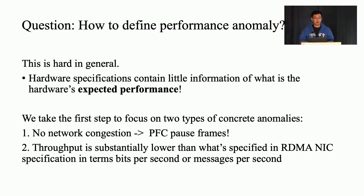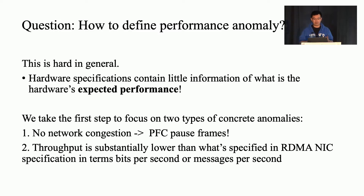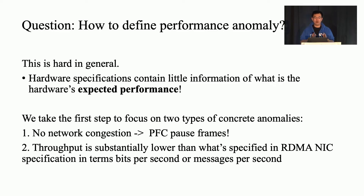To build such a tool, we first need to answer how to define a performance anomaly. This is hard because hardware specifications contain little information about what expected performance should be, especially given the variety of application workloads. Therefore, we take the first step to focus on two types of concrete anomalies that can be precisely defined and are of great importance in production environments. The first is that there should be no PFC pause frames when the network is not congested — for example, no slow receiver. The second is that throughput should not be much lower than the NIC specification, for example not more than 20% lower in terms of bits per second or messages per second.